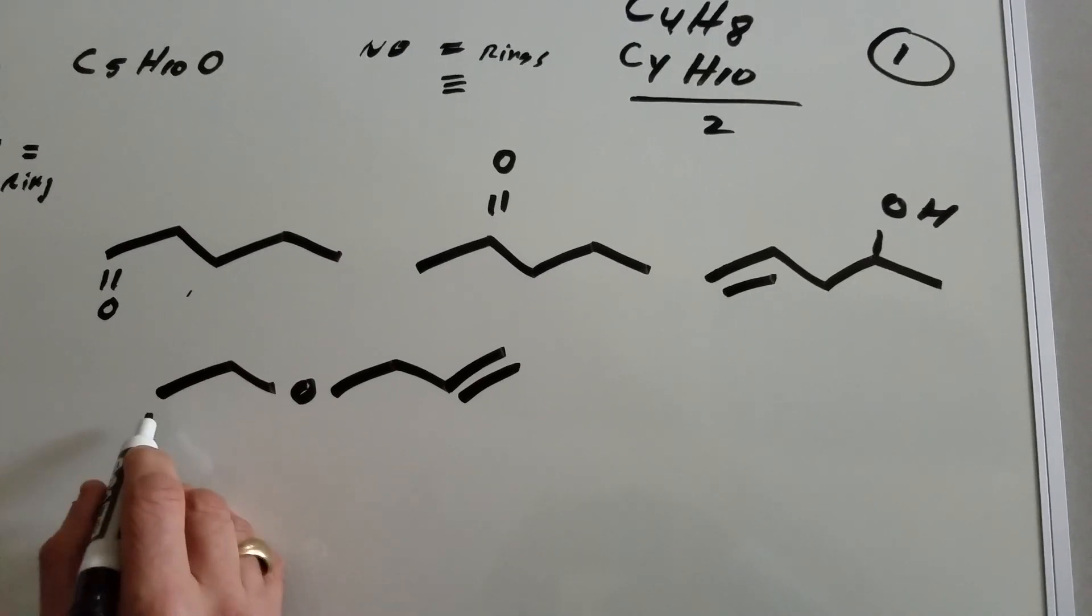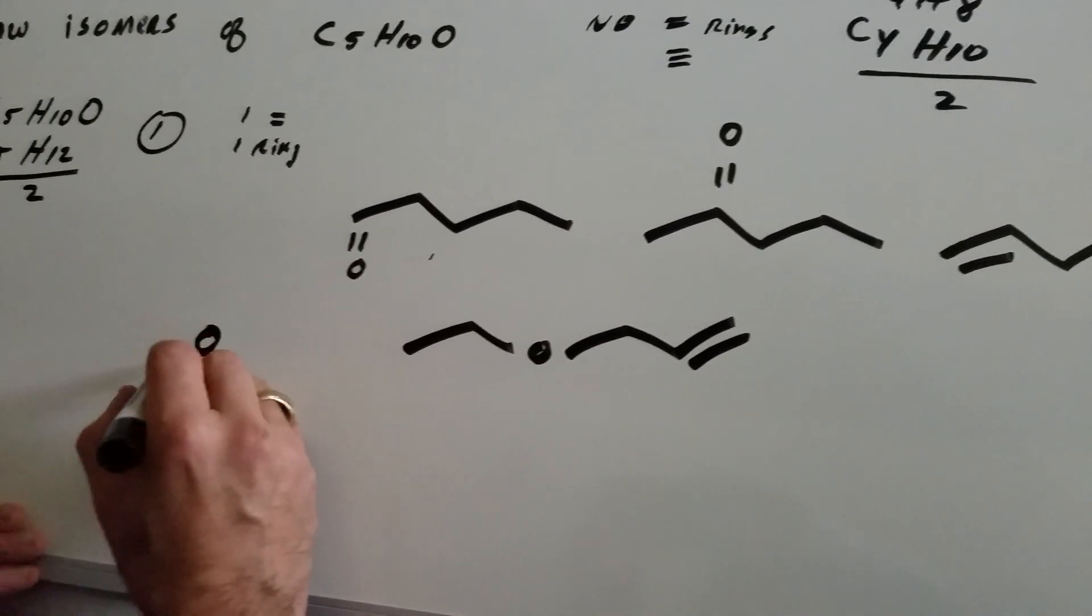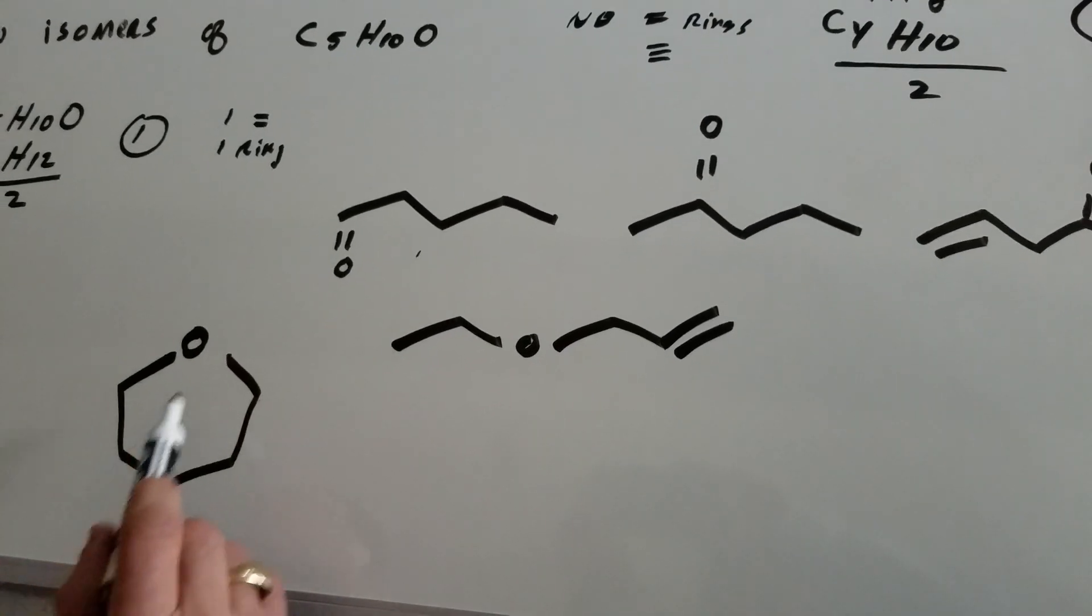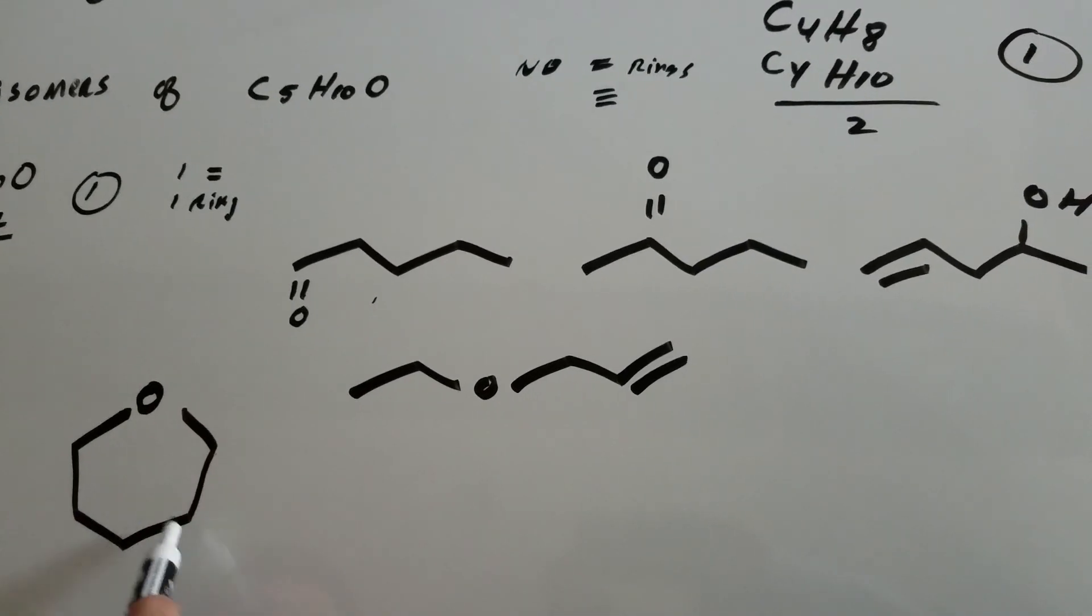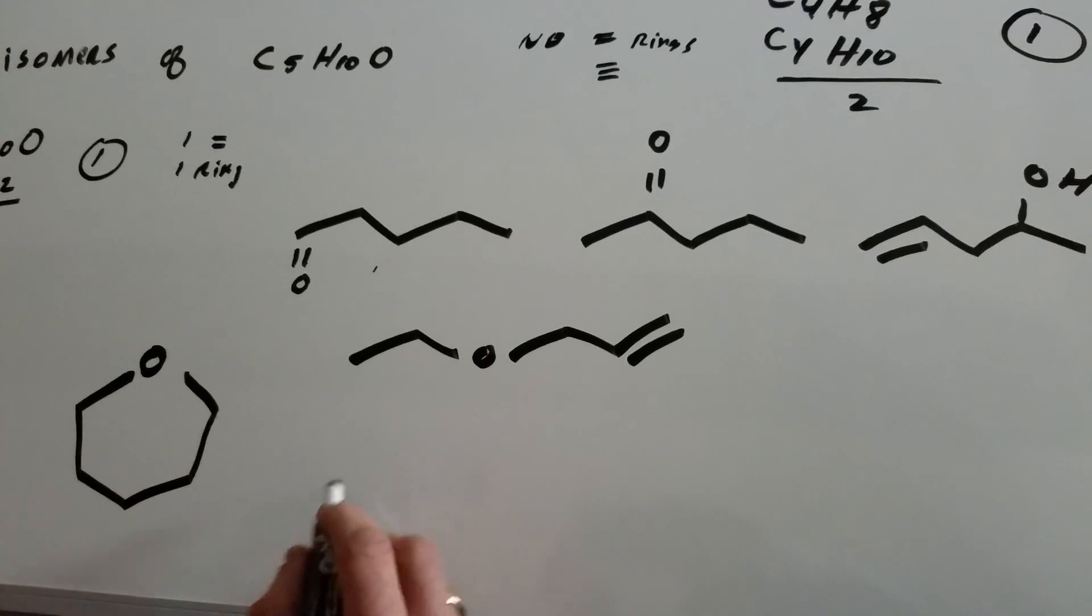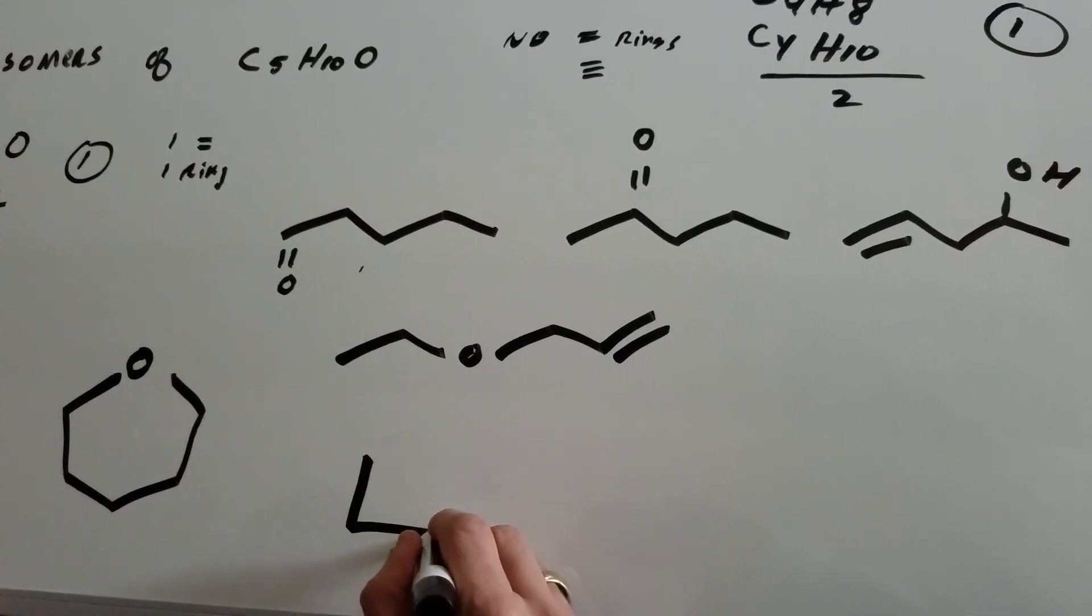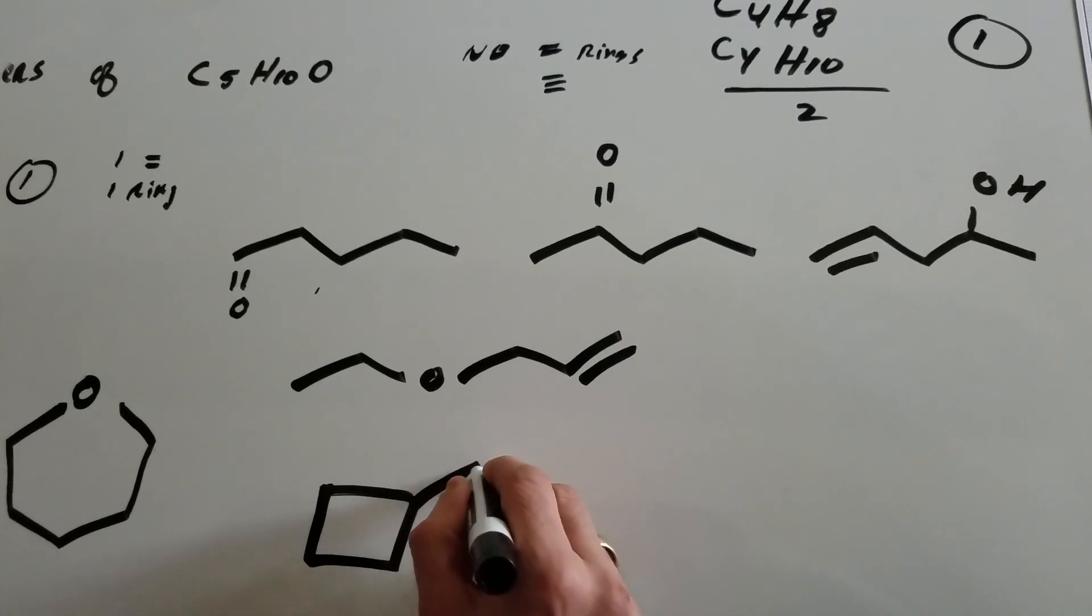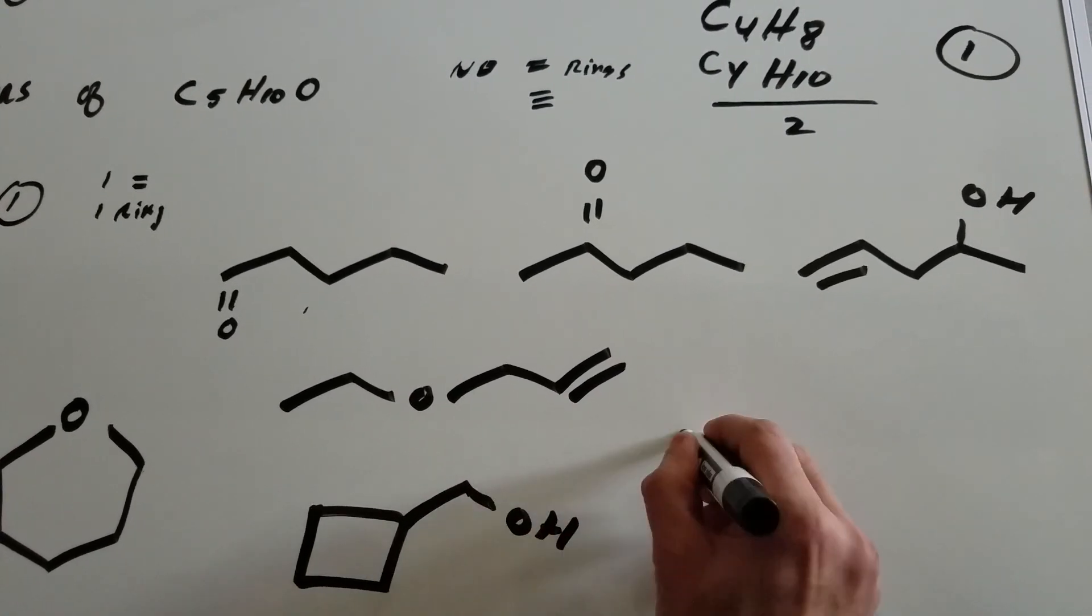Or, instead of that, what if I did something like this? How exotic. And as you can see, I made a ring. 1, 2, 3, 4, 5. And there's my O. Or, I could do something like this. Like that. There's 5. And I could put an O anywhere my heart desires.